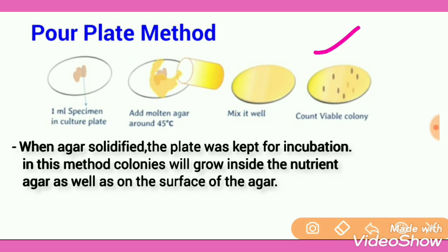In this image you can see colonies here — this is a colony, this is a colony, these are colonies on the culture media surface, and these are inside the petri dish — showing colonies both on the surface and inside.